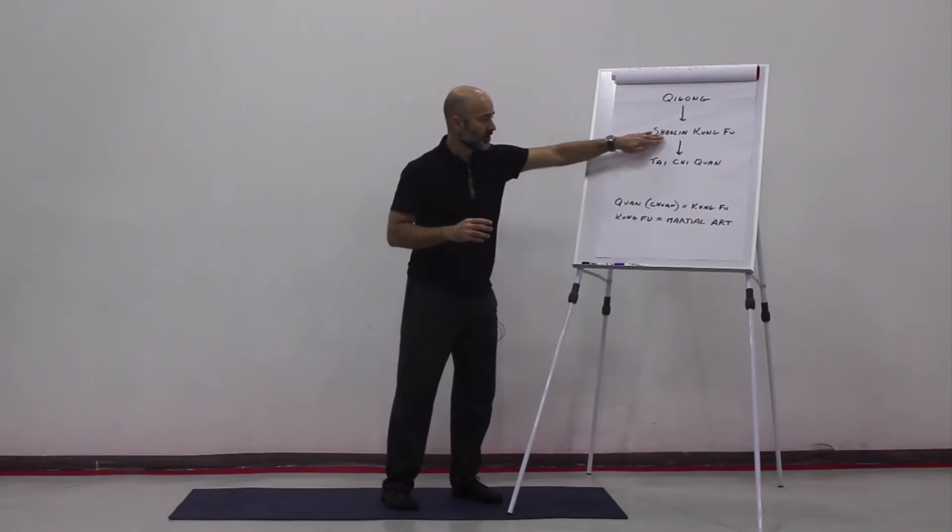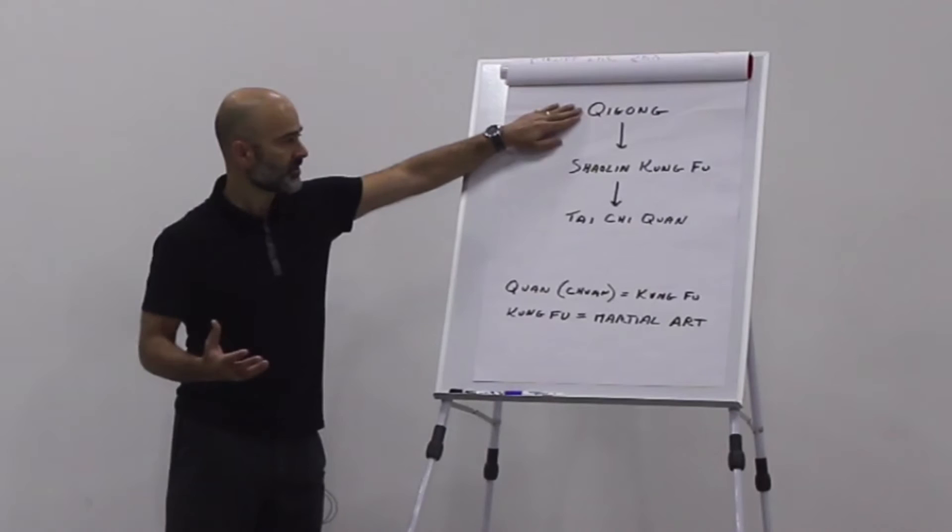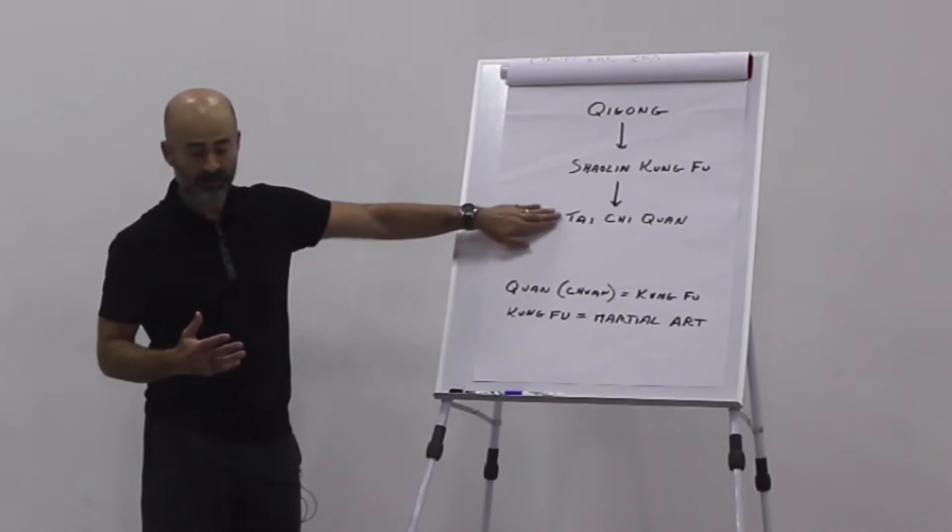So it was gradually building on the theories of yin and yang, of qi, of the five elements, and some of these were incorporated into Shaolin Kung Fu, and then later certainly yin and yang really that's what this points to, is this theory of harmony in yin and yang.